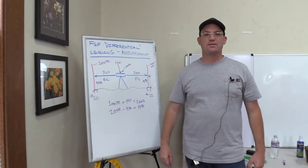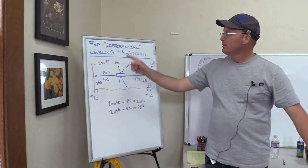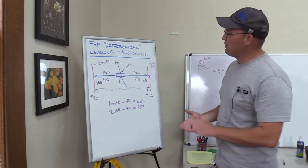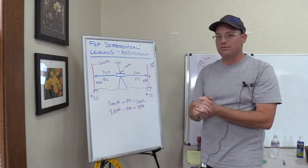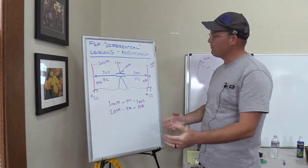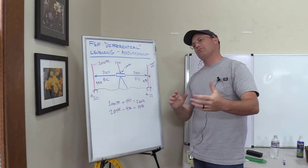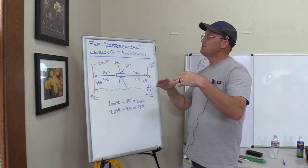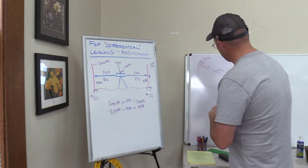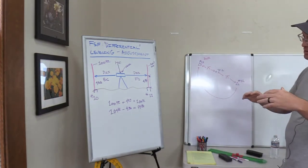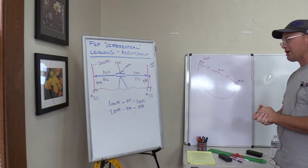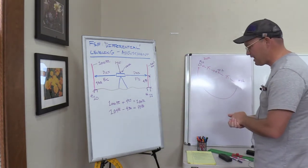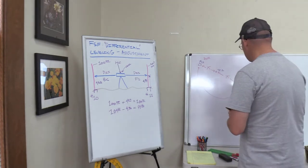Hey guys, it's Landon Blake with Redefine Horizons. This is another Field Survey Friday video on differential leveling. In this video, we are going to talk about how you adjust the closure in a differential level loop or level run. If you're not familiar with differential leveling, you want to go back and watch the first video we did in this series — it talks about an overview of differential leveling. We talked a little bit in that first video about how you calculate a closure error, and we'll review that. Then we're going to talk about some different ways you can adjust that error.